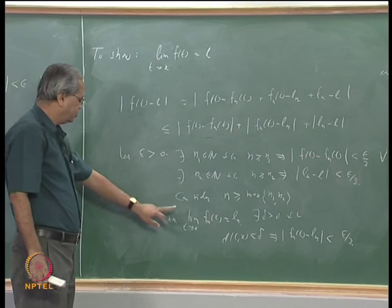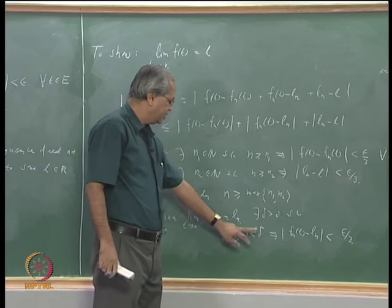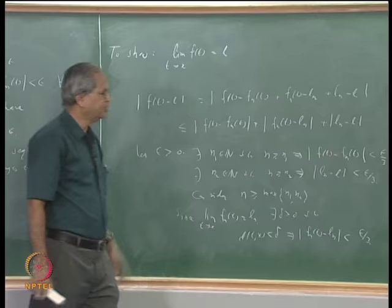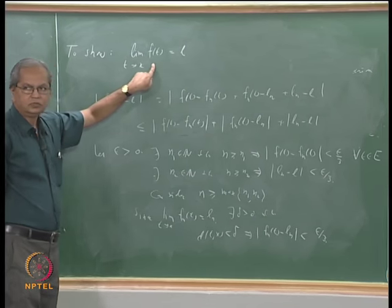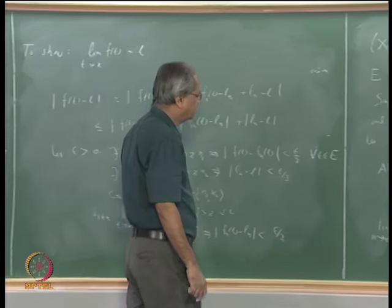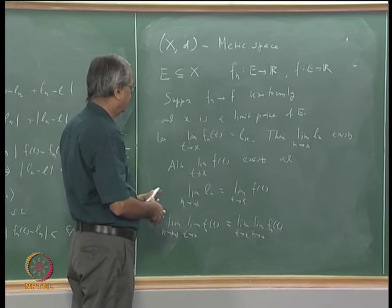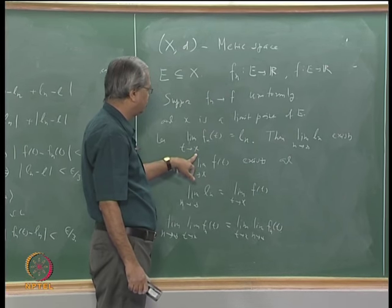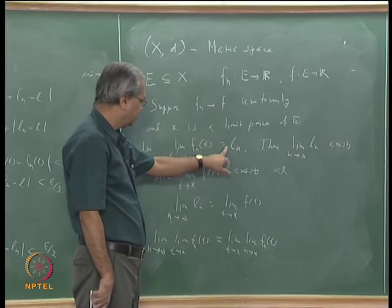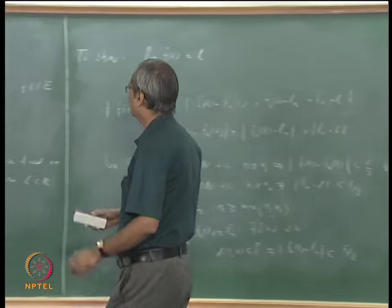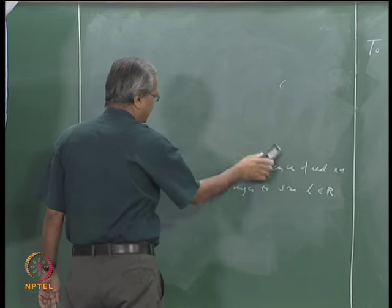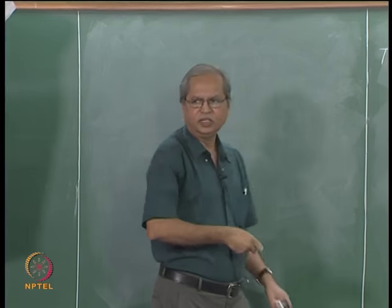This proves the theorem completely. Given epsilon we found delta such that whenever the distance between t and x is less than delta, |f(t) - l| < epsilon, which is the same as showing lim_{t→x} f(t) = l. As a simple corollary, if each f_n is continuous then f is also continuous.